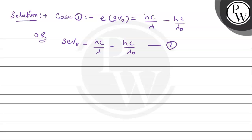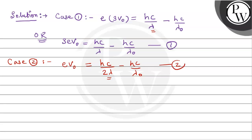Now we will deal with case number two. In case number two, the stopping potential is V₀, so we have eV₀. And the wavelength changes — in the first case wavelength was lambda, so in the second case wavelength becomes 2 lambda. So: eV₀ = hc/(2λ) − hc/λ₀. This is our equation number two.